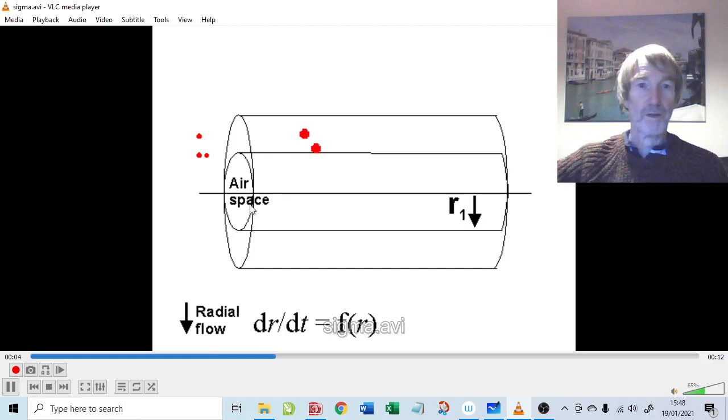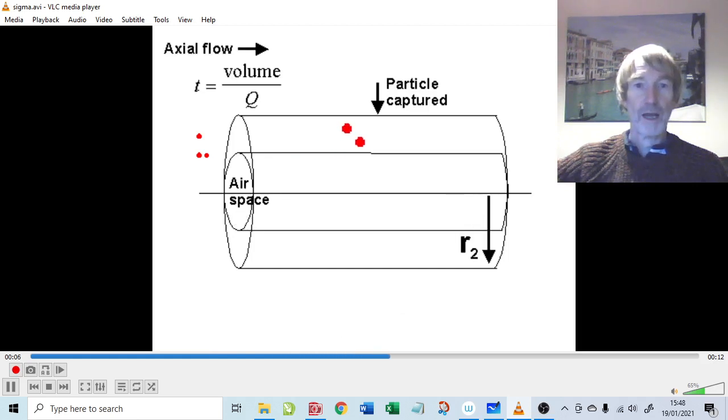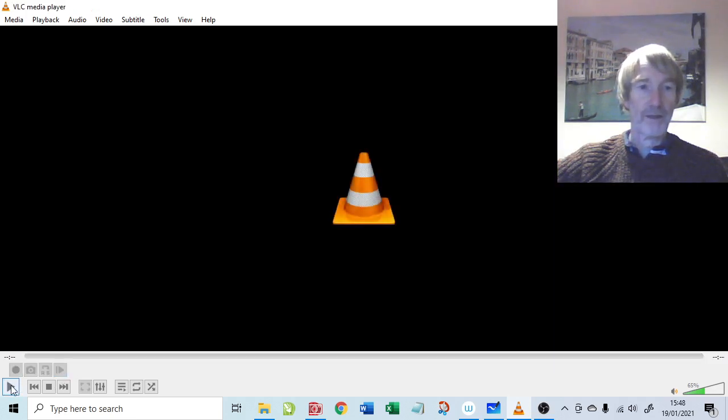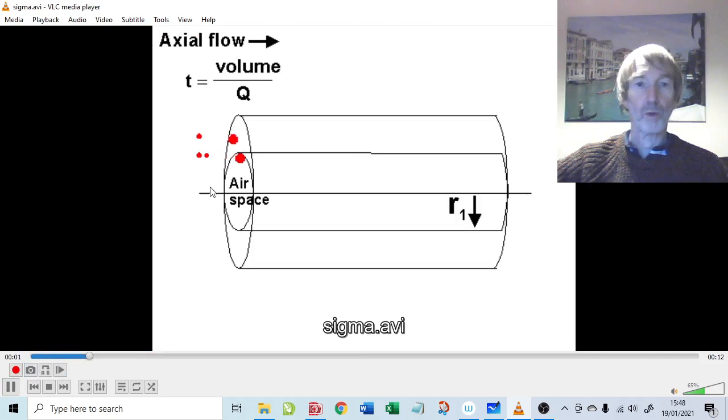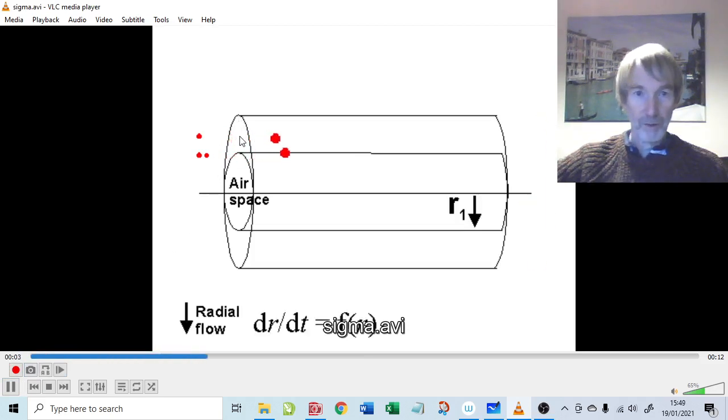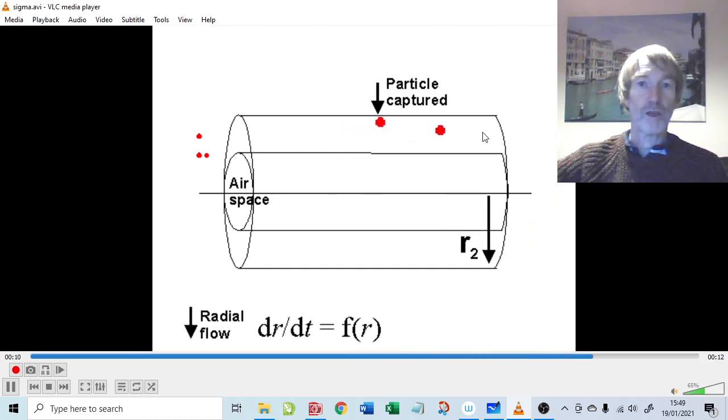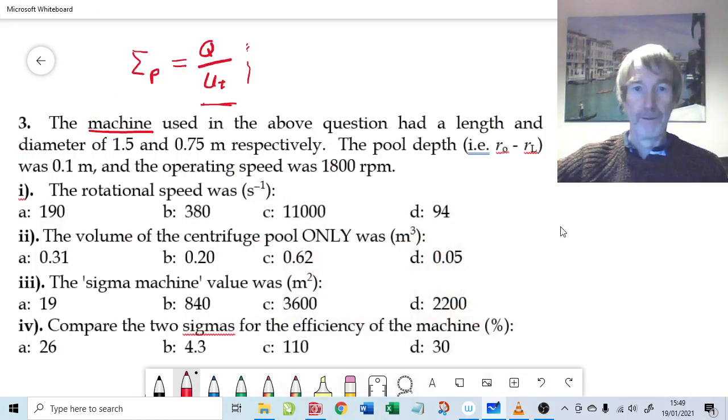Here is an airspace inside the centrifuge, and one thing that I need to explain is the pool, what's called the pool. The pool is the liquid volume between what's illustrated here as R1 and R2, so it's the region where the particles are actually flowing, not including the airspace. We'll come to that centrifuge pool in a moment in part two.